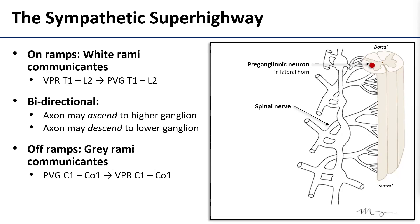Now let's look at the very important details of how this works. Like all superhighways, we have on-ramps and off-ramps. We're going to call the on-ramps white rami communicantes and the off-ramps gray rami communicantes. If we're talking about one ramp, it's a communicans; if we are talking about multiple ramps, they are communicantes.